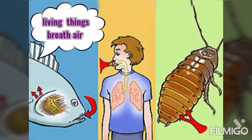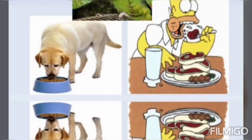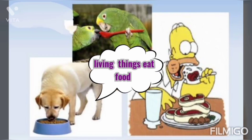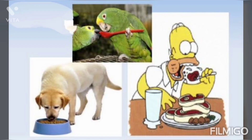Living things breathe air. Non-living things do not breathe. Living things eat food to live and grow. Most plants make their own food. Animals get their food from other animals and plants.